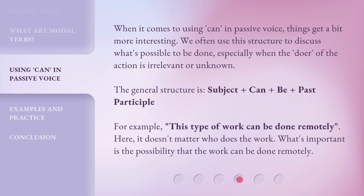When it comes to using can in passive voice, things get a bit more interesting. We often use this structure to discuss what's possible to be done, especially when the doer of the action is irrelevant or unknown. The general structure is: subject plus can plus be plus past participle. For example, 'this type of work can be done remotely.' Here, it doesn't matter who does the work. What's important is the possibility that the work can be done remotely.